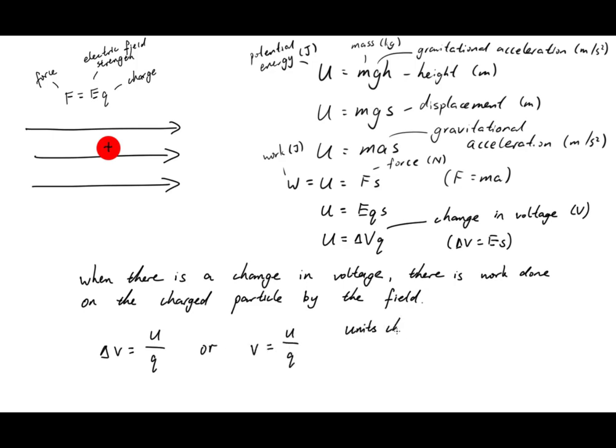We can do a unit check. Voltage has units of joules on coulombs, potential energy has units of joules, and charge has units of coulombs. So the units check out.